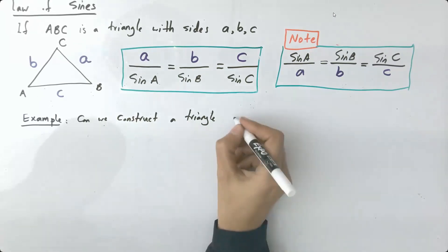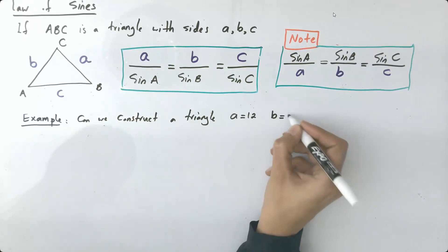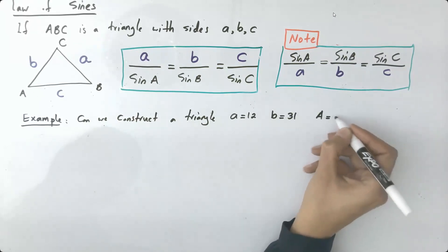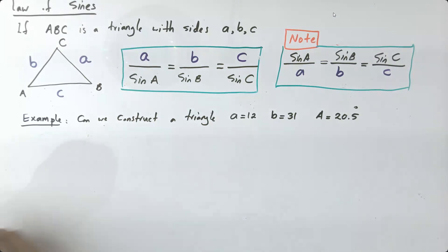I'm going to give you A to be equals to 12, B is 31, angle A is 20.5 degrees. Okay, very good. So what do we have here?